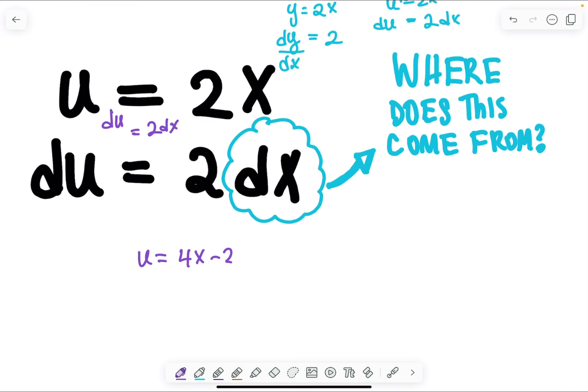So if you have u is equal to 4x minus 2, you could say du is just the derivative of this, which is 4, and then add a dx or whatever variable is in your problem. If it was t, it would be dt.